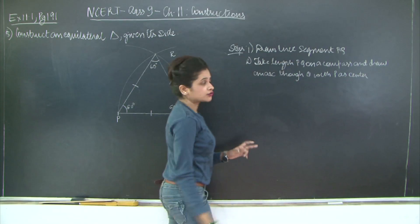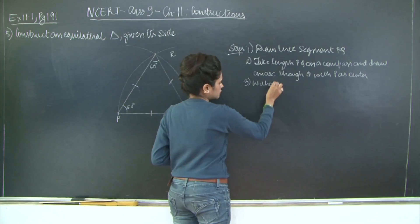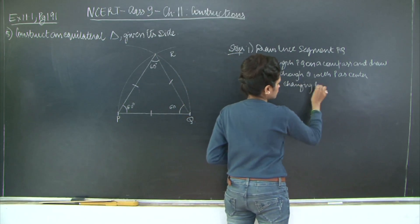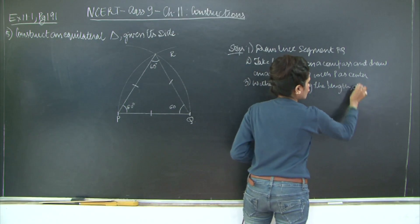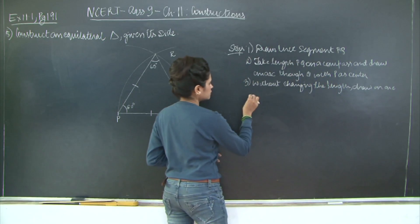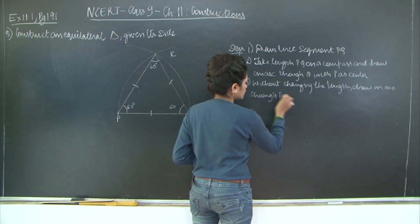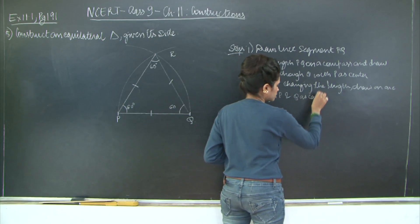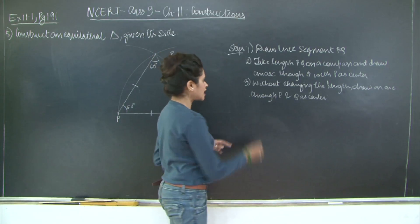Now without changing this length, draw an arc through P with Q as center. Mark the point of intersection of arcs as R.